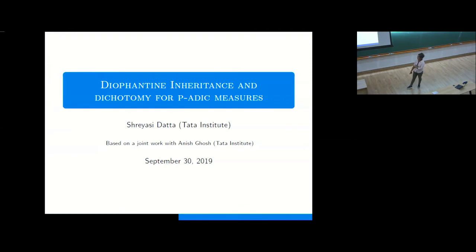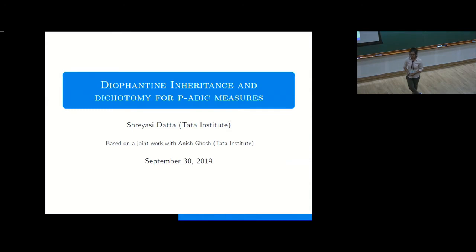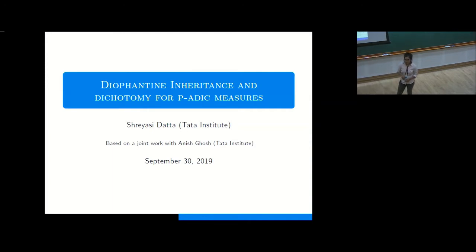Today I am going to talk on a work with my advisor Anish Ghosh. This morning we already saw an approximation of matrices — real matrices with non-singular integer matrices — and in that context the set of very well approximable vectors came into picture. For today's talk, I am going to concentrate on very well approximable vectors on manifolds. The plan is to first review the major works done in the case of manifolds, and then get into the analogous result we have proved for the p-adic setup.